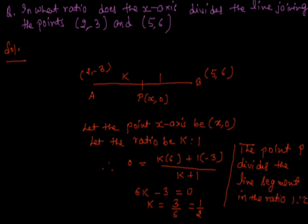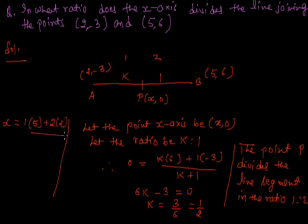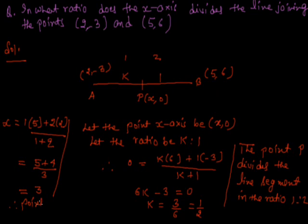Now if we want to find the point x, we can also find the value of x. The ratio is 1 is to 2, so x = (1 × 5 + 2 × 2) / (1 + 2) = (5 + 4) / 3 = 9/3 = 3. Therefore, the point on the x-axis is (3, 0), which divides the line segment in the ratio 1 is to 2.